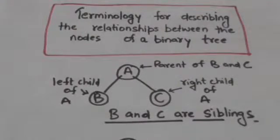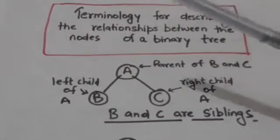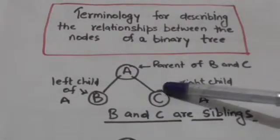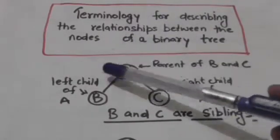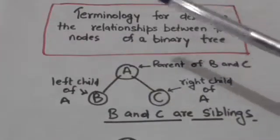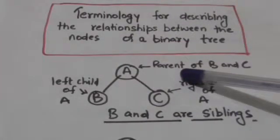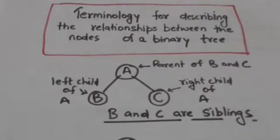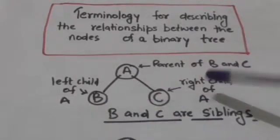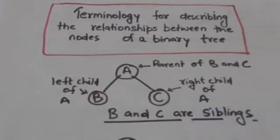Suppose there is a node A in a binary tree. Node B is the left successor of node A and node C is the right successor of node A. Then node B is called left child of node A and node C is called right child of node A. Node A is called parent of node B and C. Nodes B and C are said to be siblings.